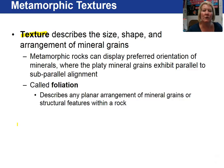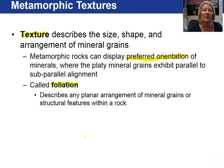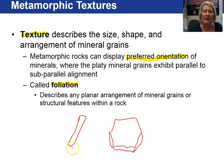With metamorphic textures, there is a certain texture called a foliation, or a foliated metamorphic texture, where there is a preferred orientation of mineral grains. The minerals that have preferred orientation tend to be elongate in nature or platy in nature, like a mica. Amphibole would be an example of an elongate mineral. A platy mineral would be the micas.